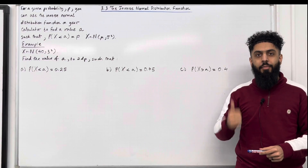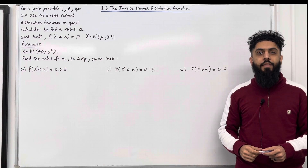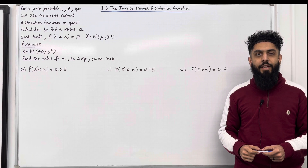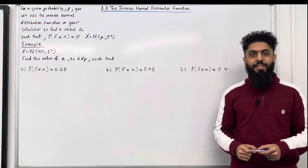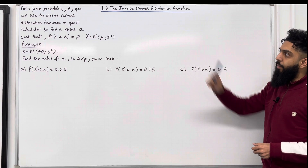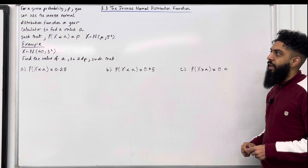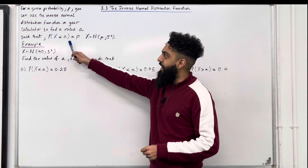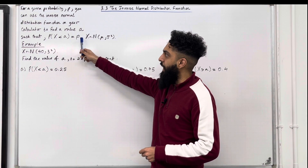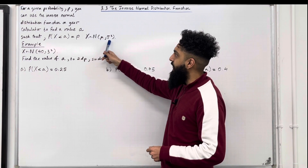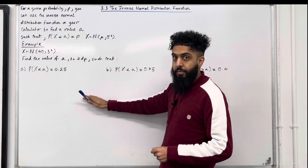Welcome back. In this teaching video, I'm looking at 3.3, the inverse normal distribution function. 3.3 represents Chapter 3, Section 3 of the Pearson A-Level Maths Master 2 textbook. Let's go through the key fact of this section. For a given probability P, you can use the inverse normal distribution function on your calculator to find a value A, such that the probability X is less than A is equal to P, where X takes on a normal distribution with mean mu and variance sigma squared.